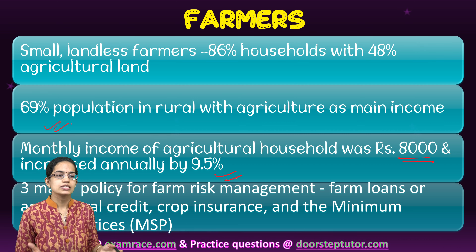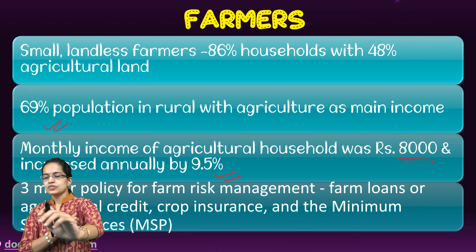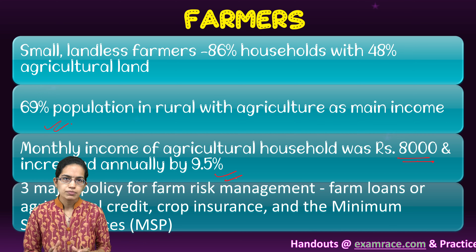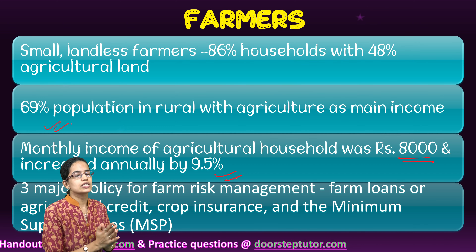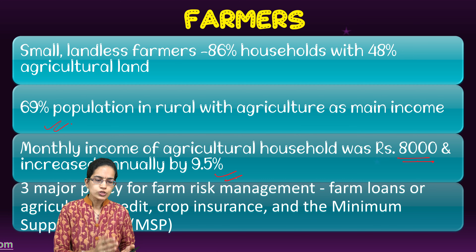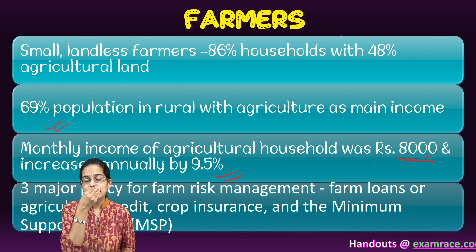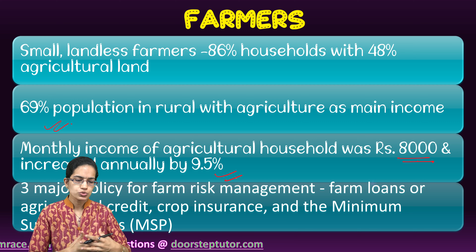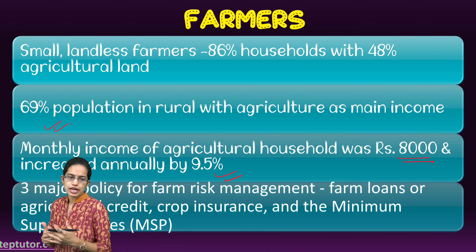Farmers are an essential part of the Indian economy. About 86% of farming households are small and landless farmers holding nearly 48% of the land, and 69% of the rural population depends on agriculture as their primary income source. The monthly income is around ₹8,000, with an inflationary rate of approximately 9.5% annually. During the lockdown, crop seasons did not witness sufficient demand, leaving farmers without excess money for the next season and disrupting both Kharif and Rabi cropping seasons.